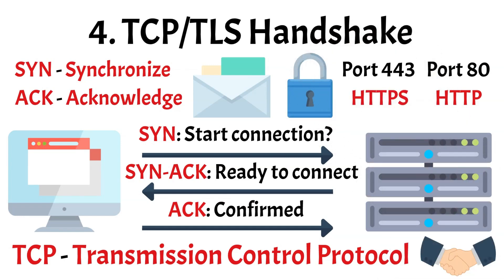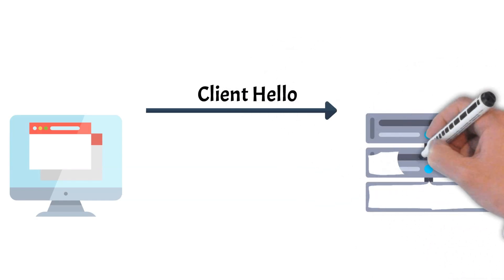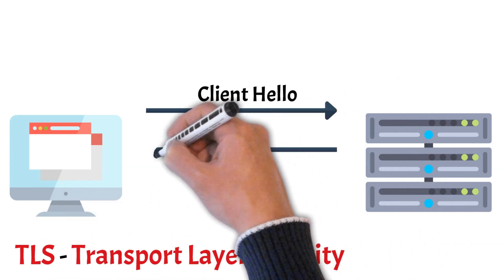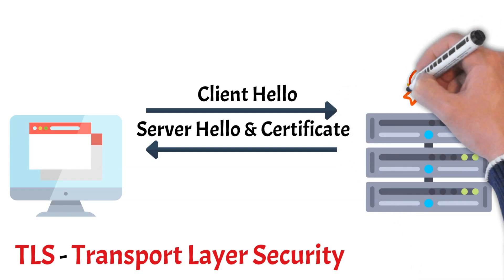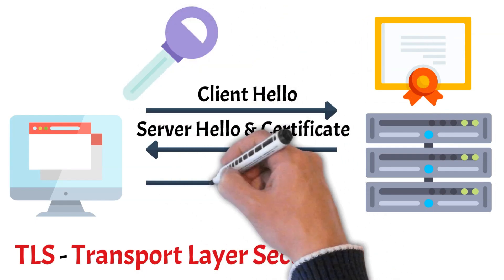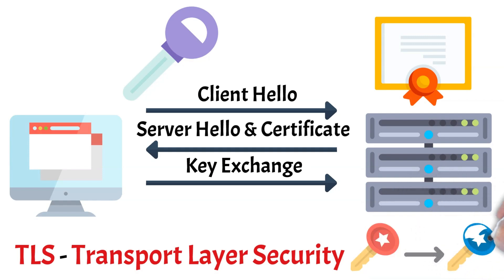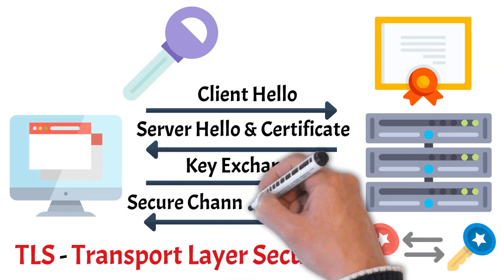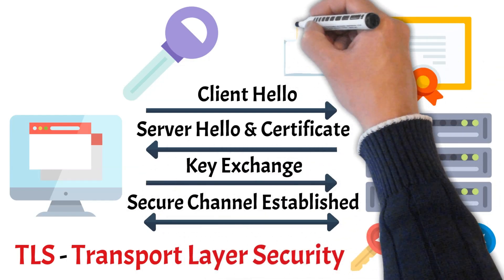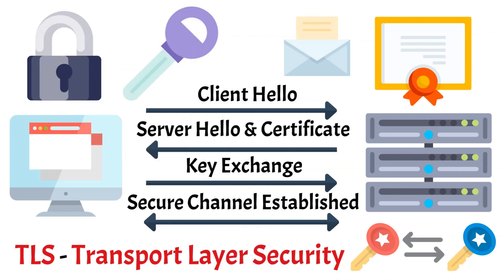With the TCP connection in place, the browser can now move on to setting up a secure encrypted session if needed. To establish a secure connection, the browser begins by sending a Client Hello message to the server, including supported encryption methods and a randomly generated number used later in the encryption process. The server replies with a Server Hello message along with its digital certificate, which proves the server's identity and contains its public key. Next comes the key exchange — the browser and server work together to agree on a shared secret key, used to encrypt the rest of the communication. Once complete, a secure encrypted channel is established, and any data sent between the two — like passwords, messages, or sensitive information — is safely encrypted and protected.